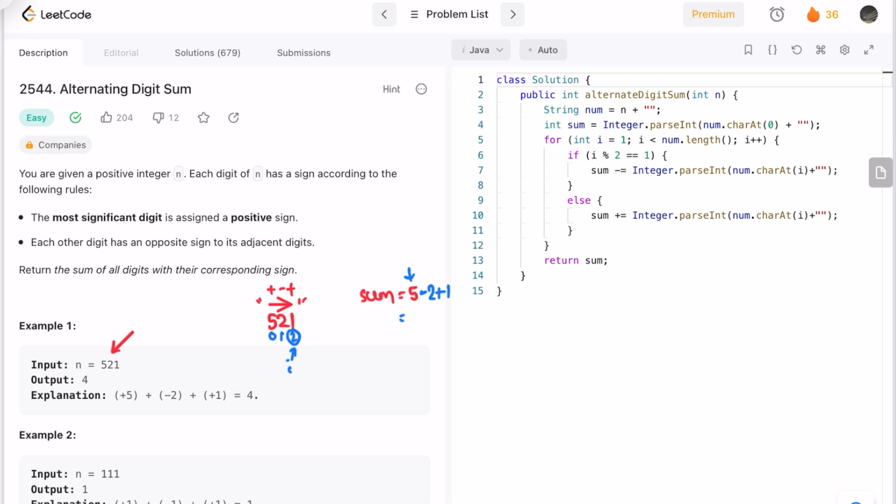Now the overall value is 5 minus 2 plus 1, that equals 4. So sum is now having the output 4, and that is the output.